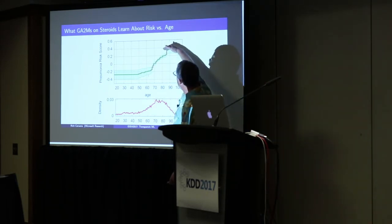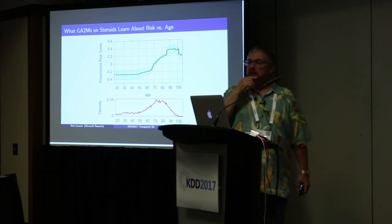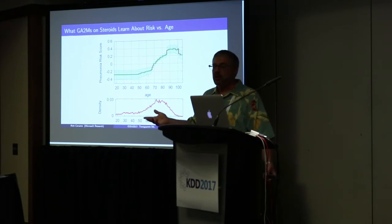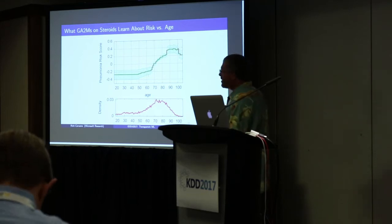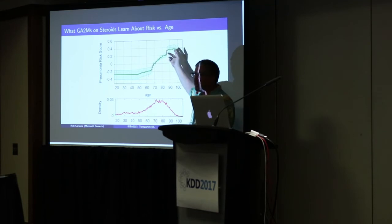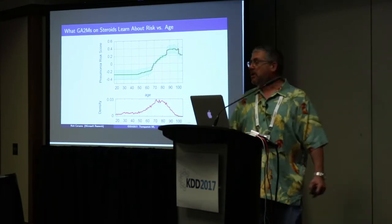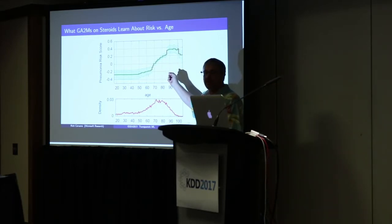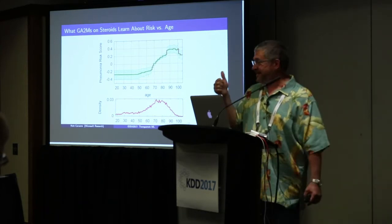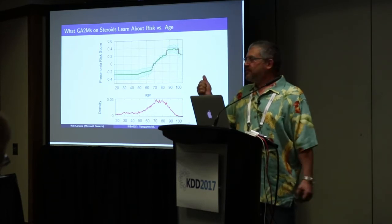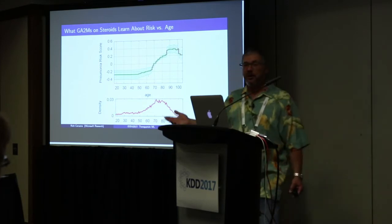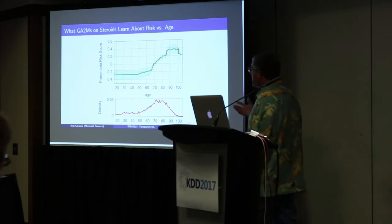Suppose instead we're an insurance provider with actuarial interest. The fact that patients who are 103 have lower risk than patients who are 97 — given the way healthcare currently happens — is something from an actuarial point of view you'd want to know. This model is right and does not need to be fixed for that use case. It only needs to be fixed if we're going to use it to help decide who to admit to the hospital. The source of this problem is in the data — machine learning didn't make a mistake. The model is not in itself right or wrong; it's only when you know what you're going to do with the model that you can start interpreting whether this model has problems or not.